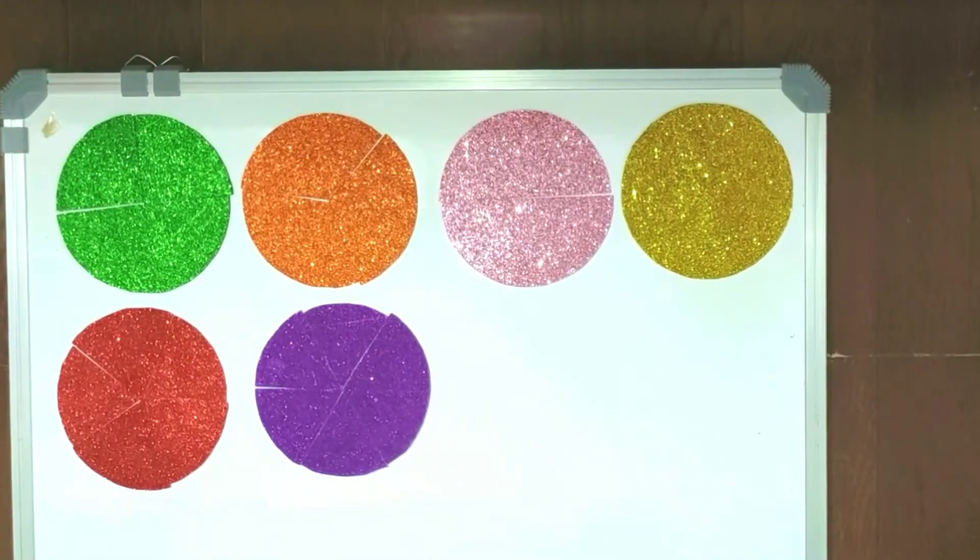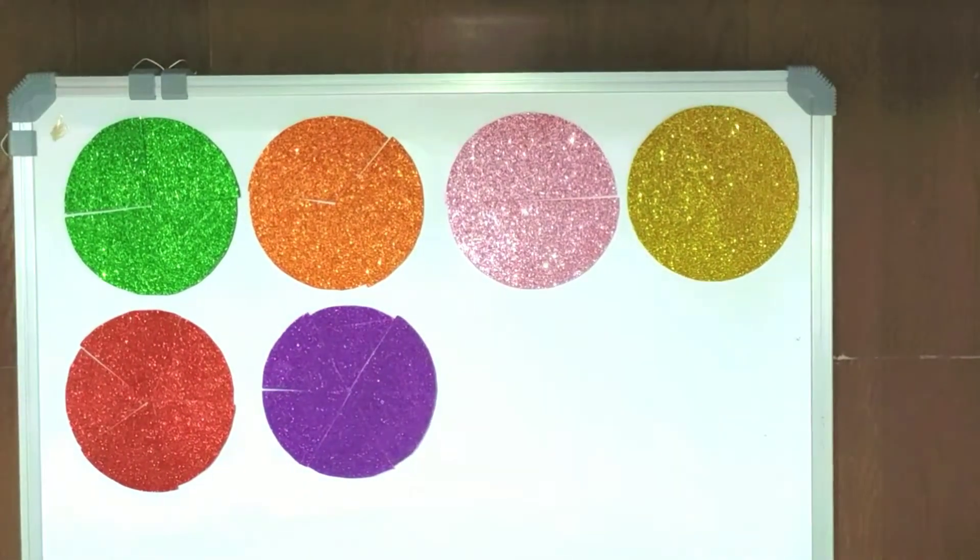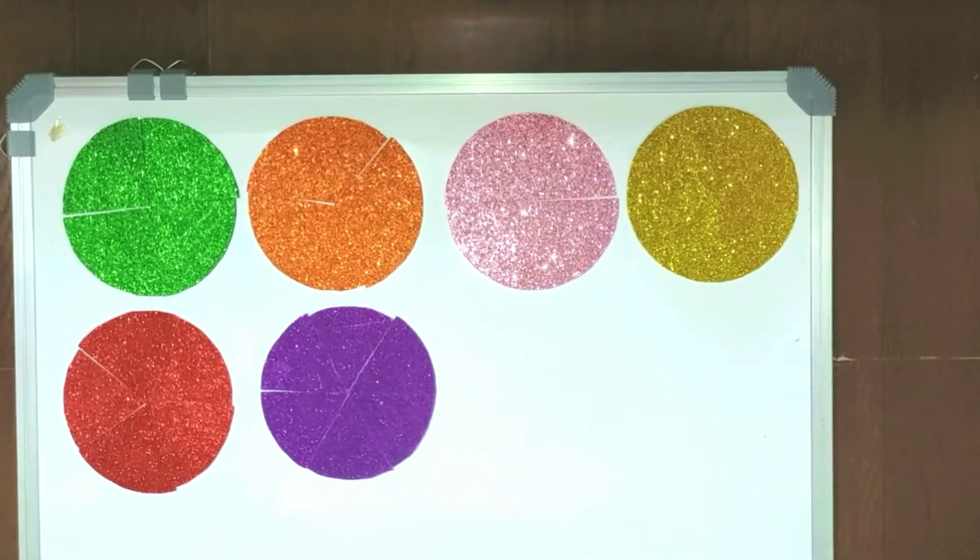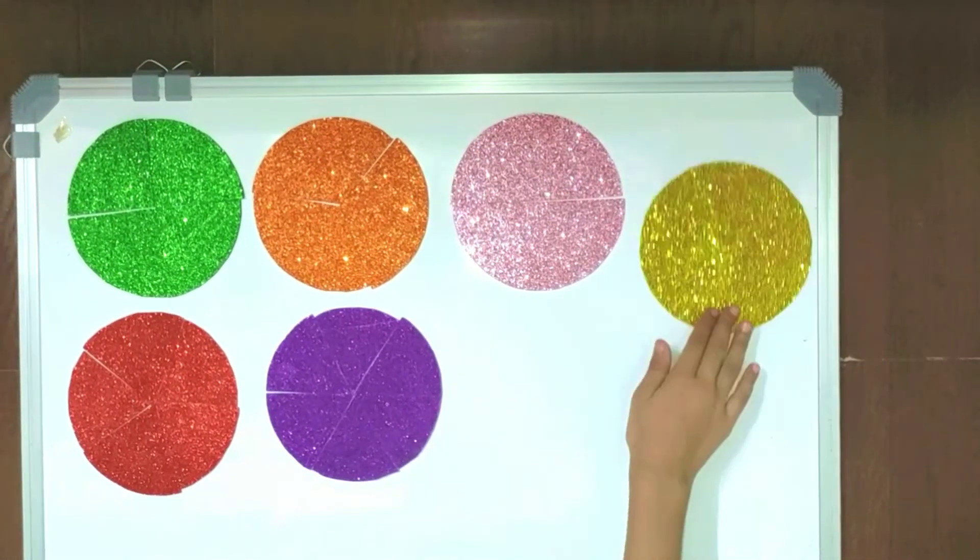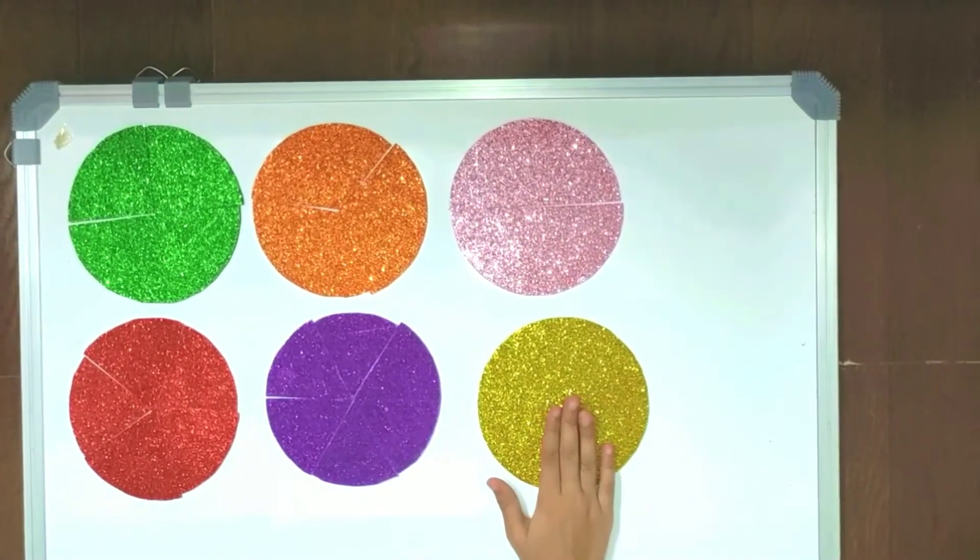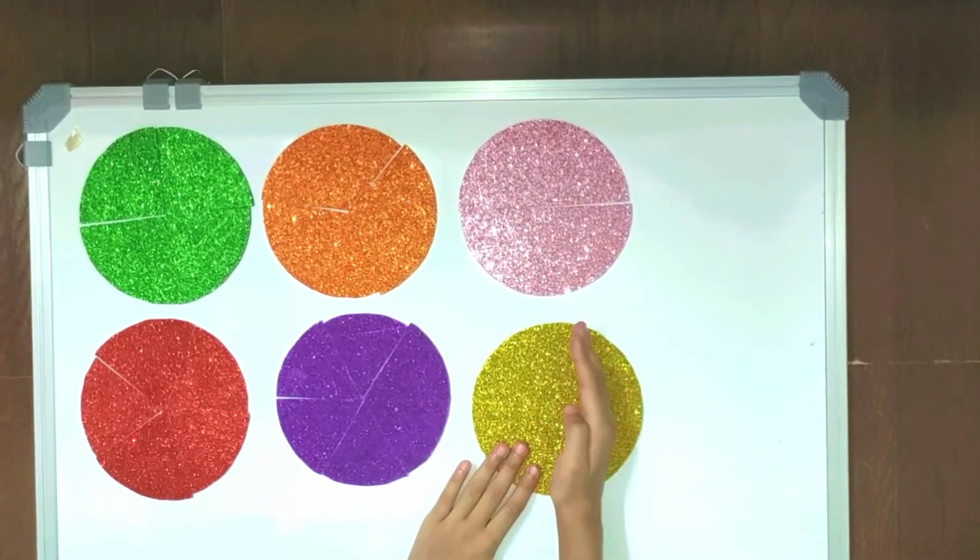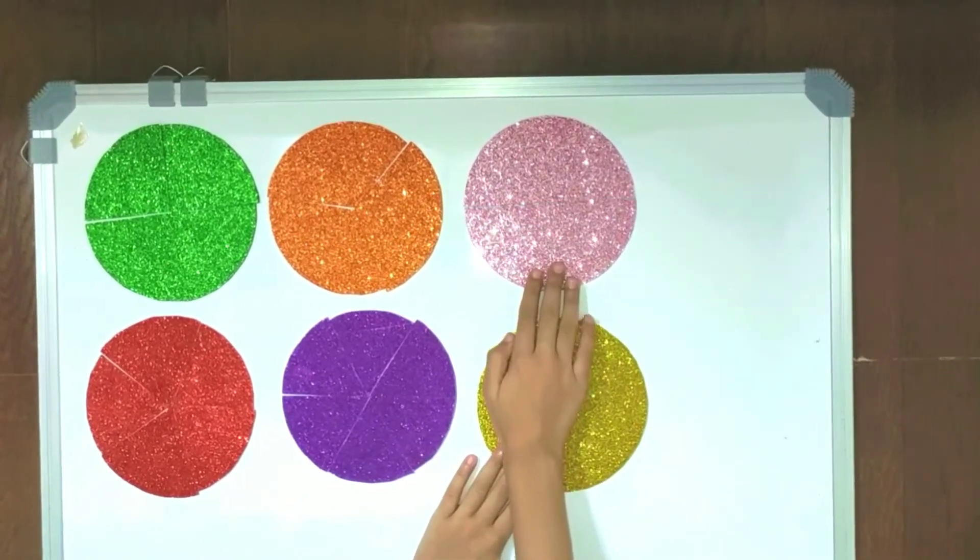So here we draw a circle on a sheet of paper and cut it out. This is a whole because it is not divided into any kind of part.